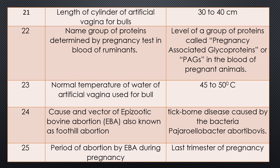Question 24. Name the cause and vector of epizootic bovine abortion, in short called EBA. Epizootic bovine abortion is also known as Foothill abortion; its occurrence is rare in India. Answer: it is caused by the bacteria Pajarolobacter abortibovis. EBA is a tick-borne disease.